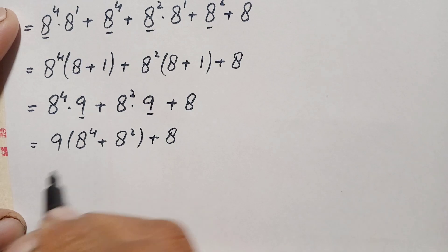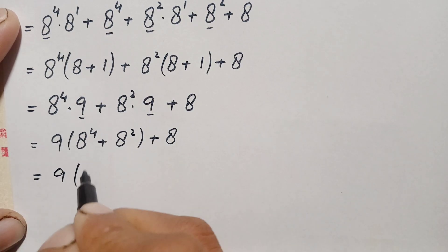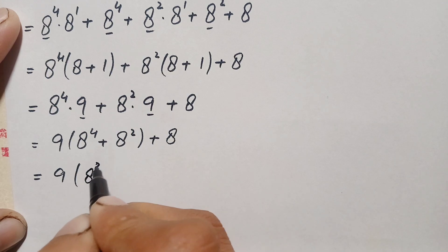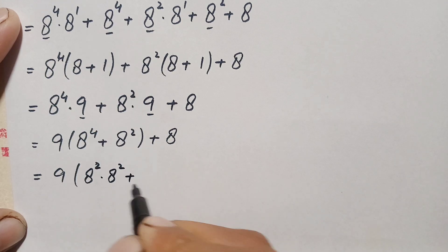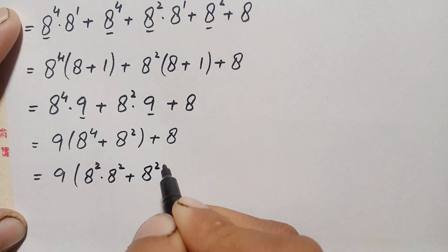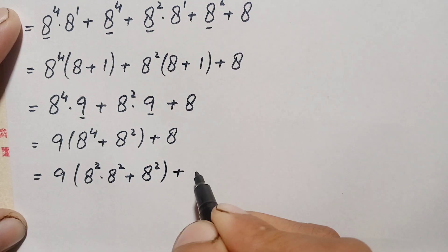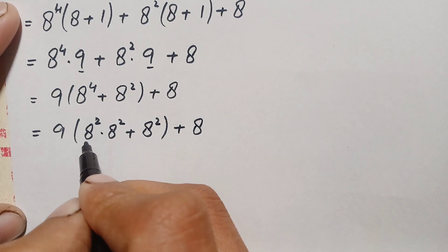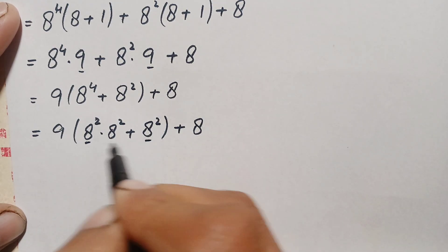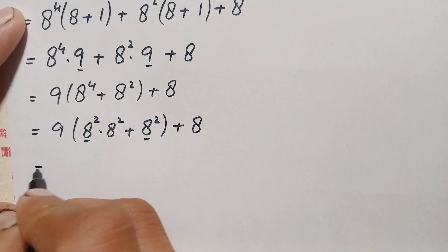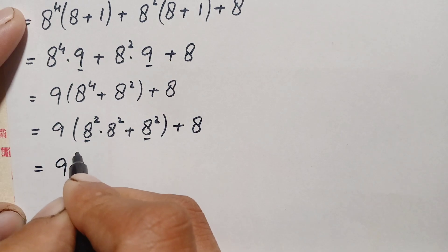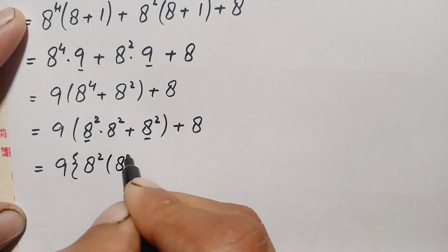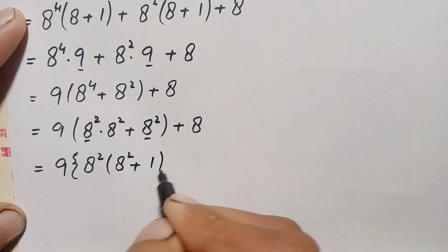Now 9 is common in the first two terms, so we take 9 out: 9 times the quantity a raised to power 4 plus a raised to power 2, plus a. We can write a raised to power 4 as a squared times a squared, then take a squared common from the two terms inside the parenthesis, giving 9 times a squared times the quantity a squared plus 1, plus a.